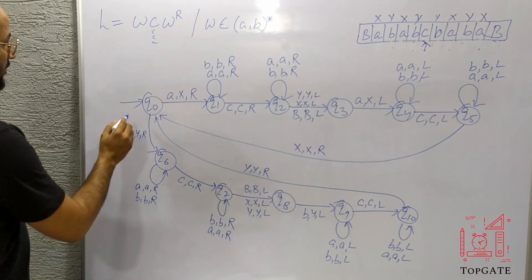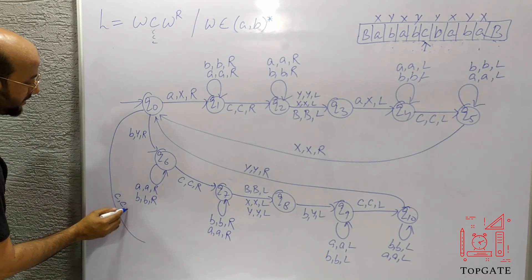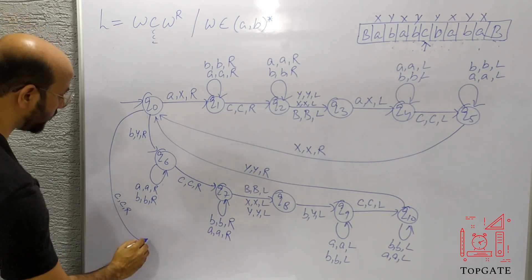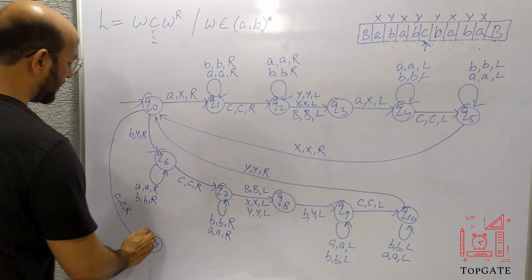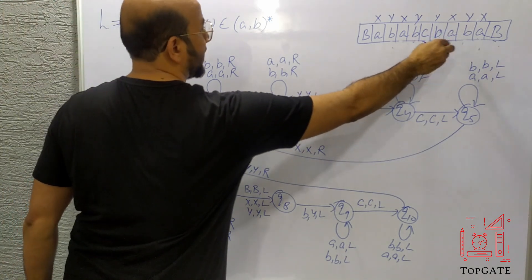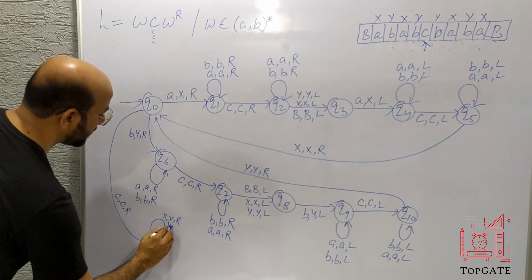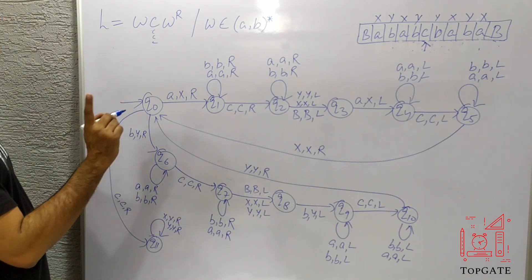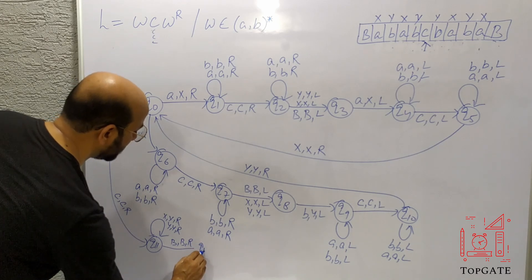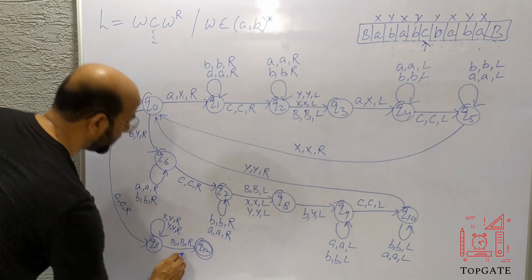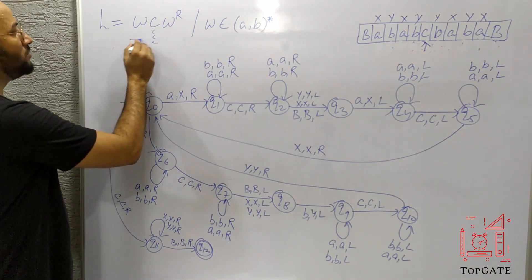Now at Q0 we encounter C with no move defined yet. So I add a move: if you find C let it be C and go right, moving to state Q11. At Q11, take a self-loop: X, X, R and Y, Y, R — all X's and Y's are skipped. Finally we find a blank, and with blank, blank, R we go to the final state. And we are done. This is the Turing machine for the language WCW^R. Thank you.